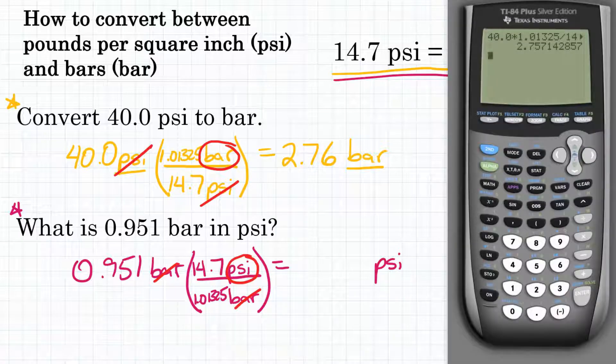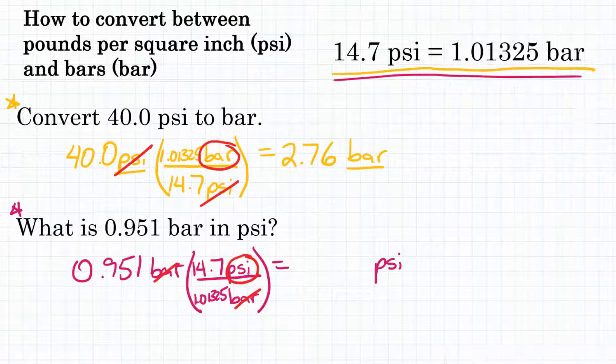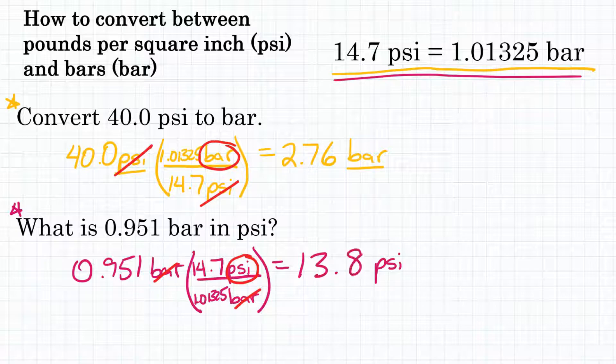We're going to start with 0.951, and then again, multiply by the top, divide by the bottom. So we will multiply by 14.7, and then divide by 1.01325. Hit enter, and let's round this answer to three significant figures, so we should get 13.8.